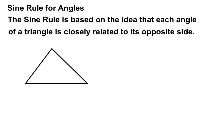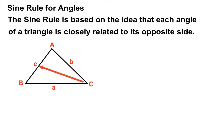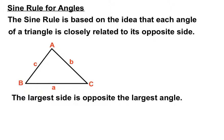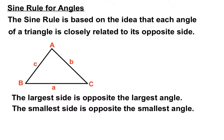Even when we name triangles there's a bit of this. When we have a capital A for the vertex of a triangle, its opposite side is named lowercase a. If we have an angle of capital B, its opposite side is lowercase b. And capital C produces an opposite side of lowercase c. That's to represent the idea that an angle produces an opposite side — they're very closely related.